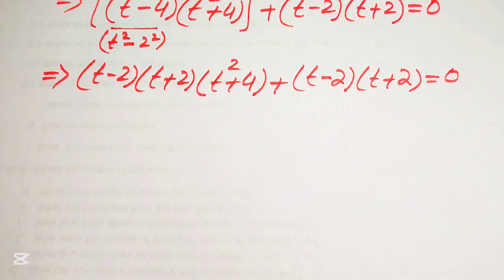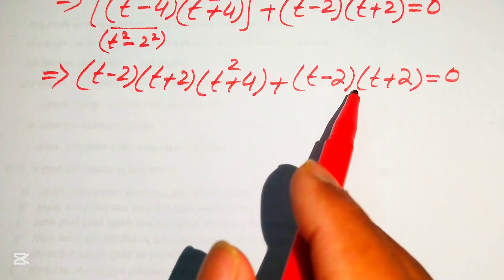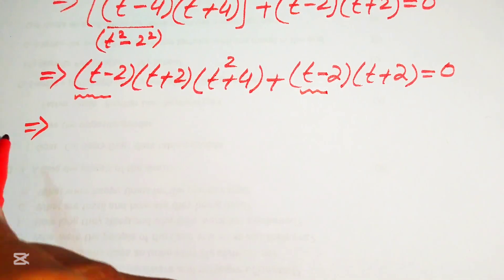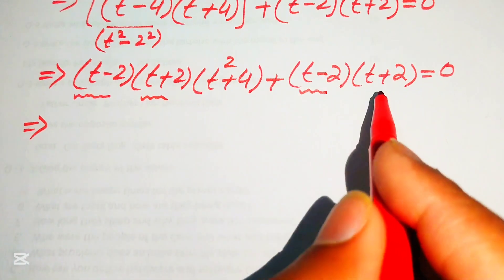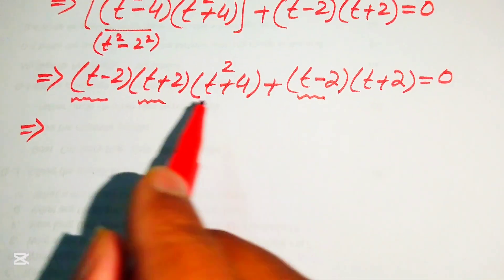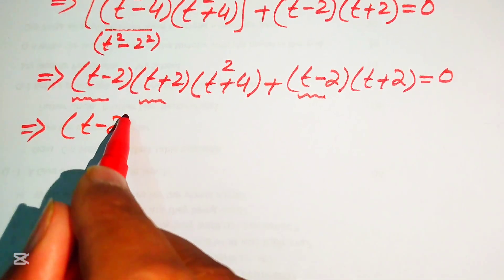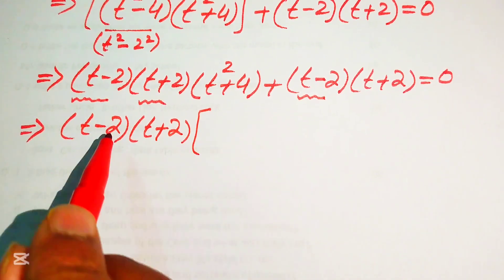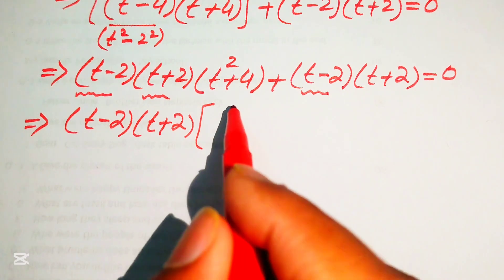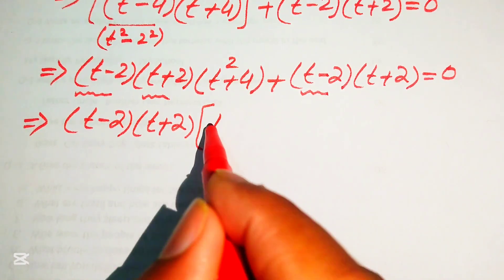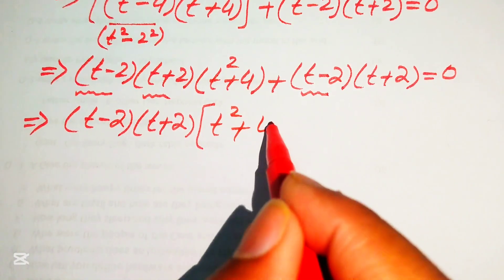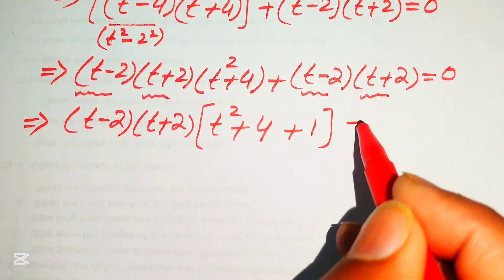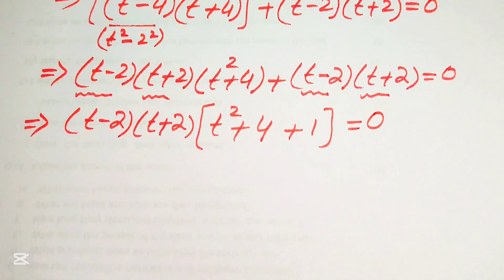Now we need further simplification. We see that t minus 2 and t plus 2 are common factors in both terms. Taking t minus 2 times t plus 2 as common, the remaining terms give t squared plus 4 plus 1, so the equation becomes t minus 2 times t plus 2 times t squared plus 5 equals 0.